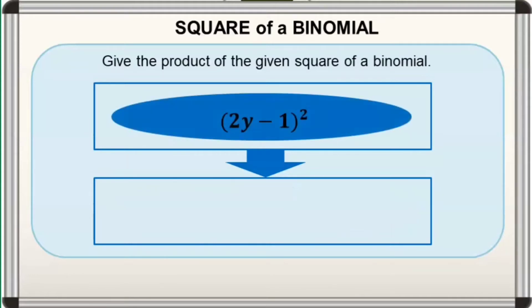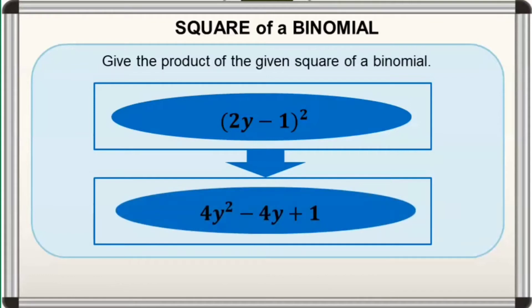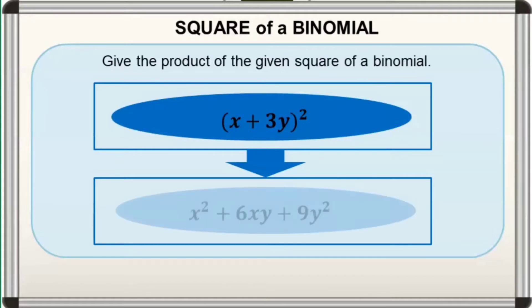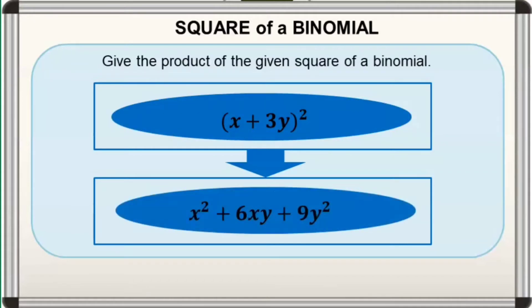For the second one, it is equal to 4y squared minus 4y plus 1. For the third one, it is equal to x squared plus 6xy plus 9y squared.